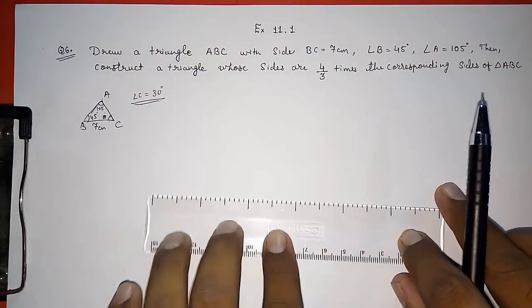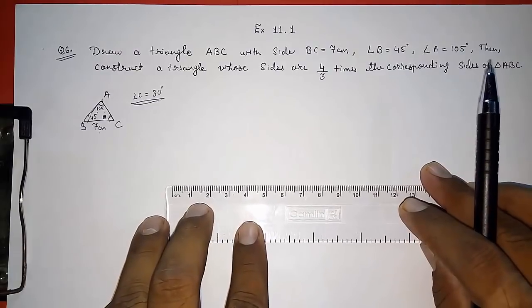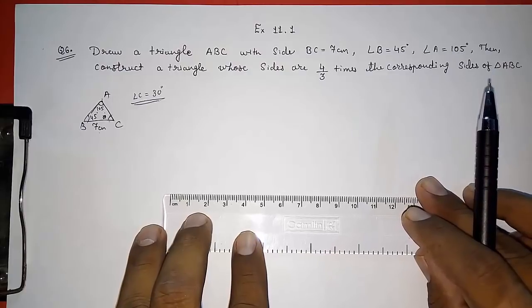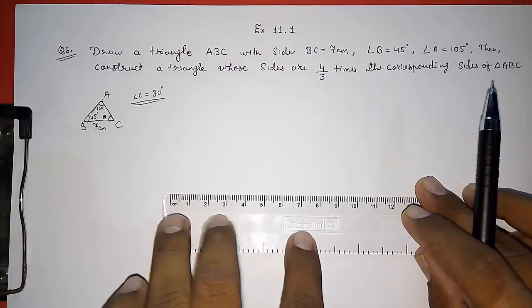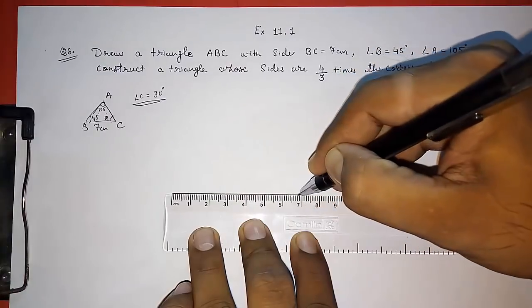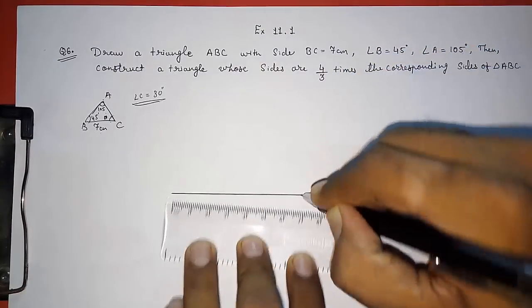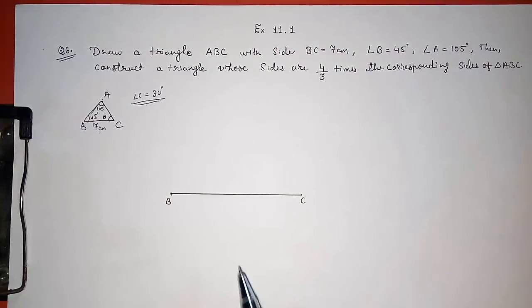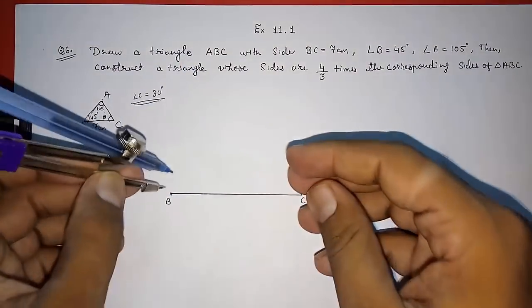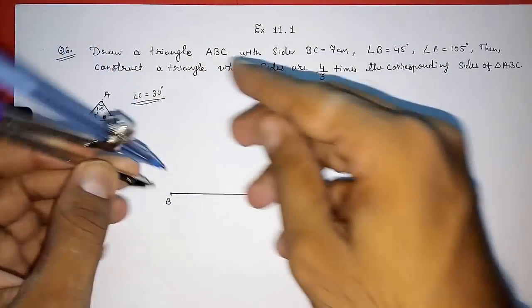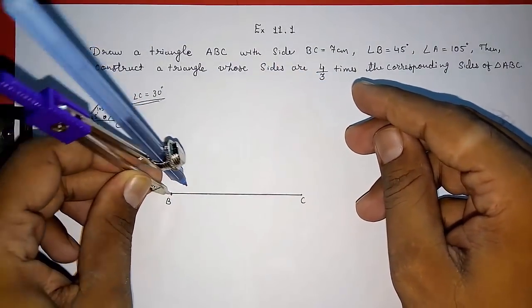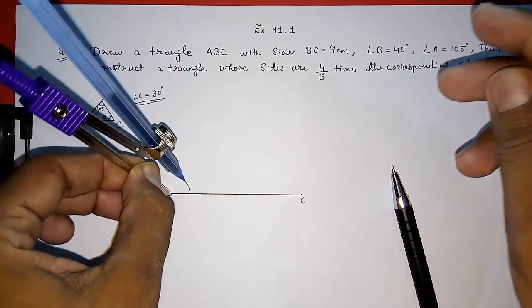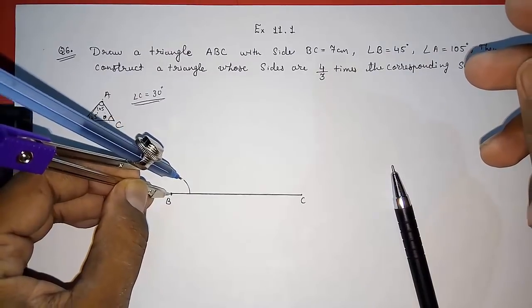Now we are going to construct side BC with 7 centimeter. Look here. Now angle B is 45 degrees, so I am going to construct it without a protractor — you have to draw with a compass only. For this, first you need to construct 90 degrees and then the bisector of 90 degrees.